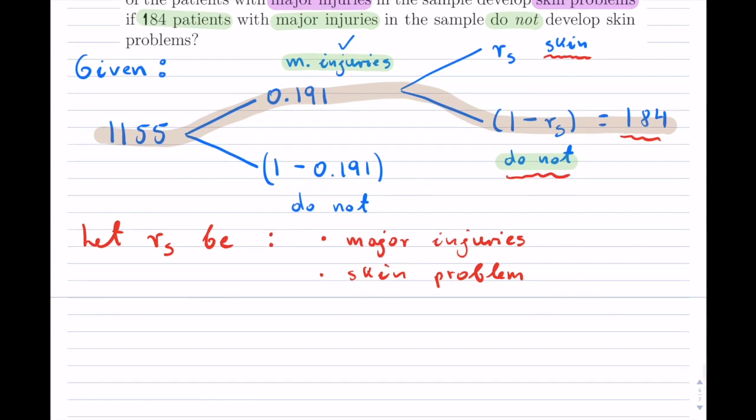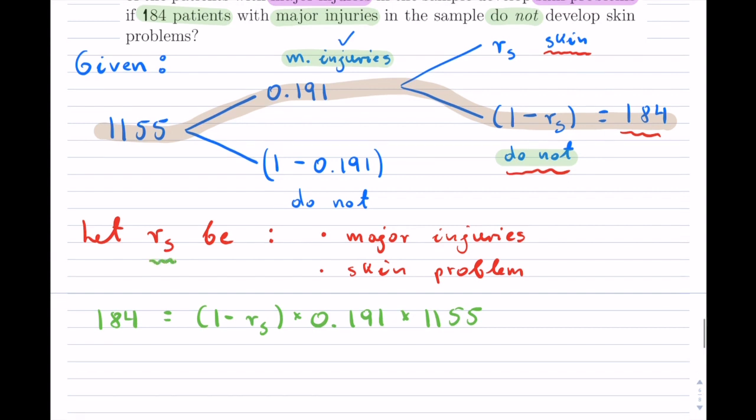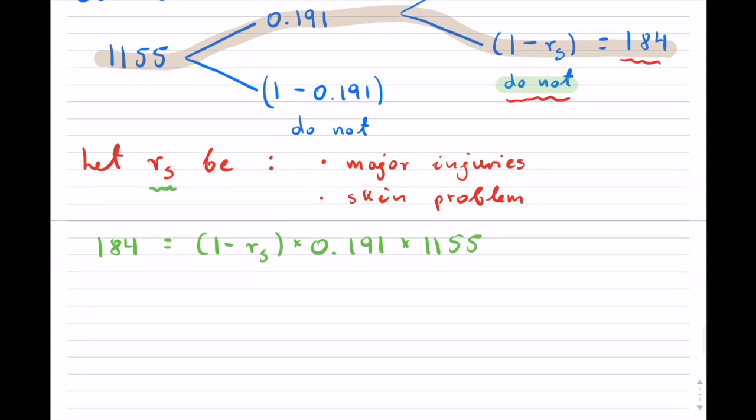And now, once we have that, I can create my equation. So again, I go from the back to the front with this. So I have 184 equals, and then I will multiply these out. And now I can solve the equation. So I'm going to be solving for RS, which is actually what I want out of this equation.